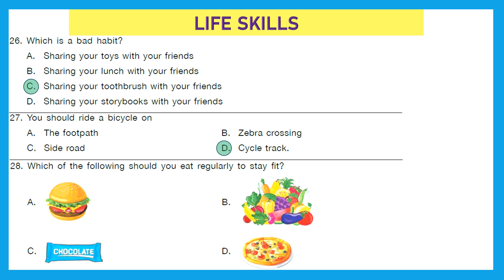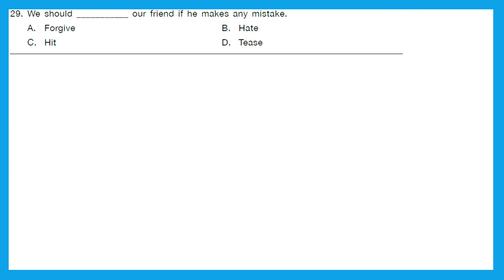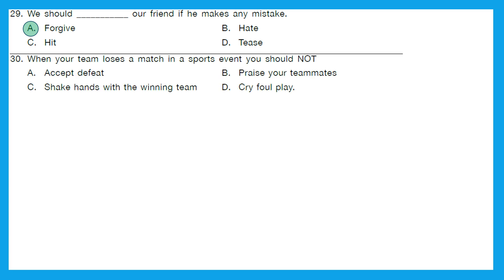Is it junk food or a king burger, fruits and vegetables, chocolate, or pizza? The right answer is option B — fruits and vegetables. We should eat fruits and vegetables regularly to stay fit. Question 29: We should do what to our friend if he makes a mistake — forgive, hate, hit, or tease? The right answer is option A — forgive.